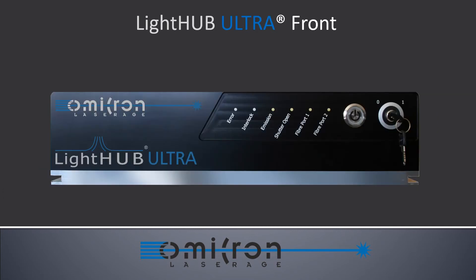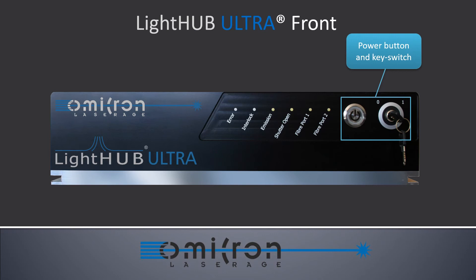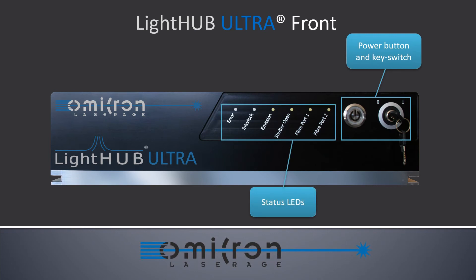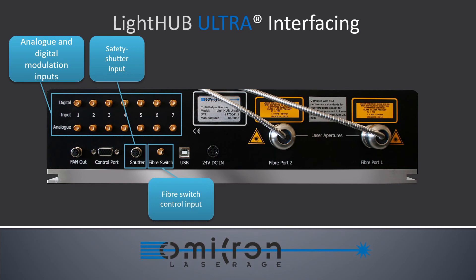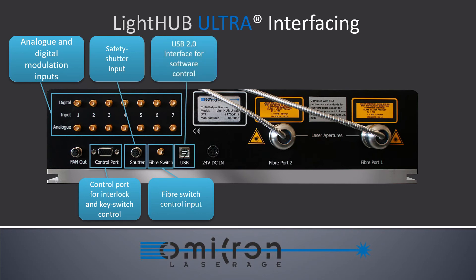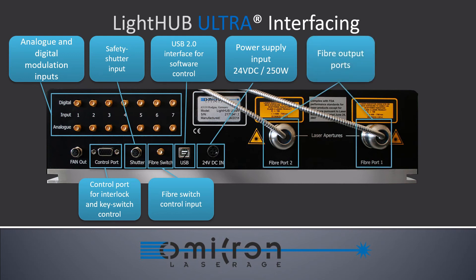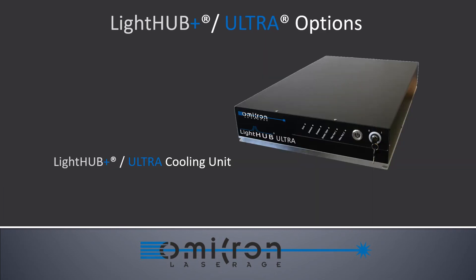As the LightHub Ultra can be equipped with two fiber outputs, you will find additional indicator lights at the front, like a fiber port indicator and shutter open LED. The LightHub Ultra has seven digital and analog modulation inputs, shutter input, fiber switch control port, control port for the interlock and key switch functions, USB interface for software control, power connector, and two fiber outputs as well as a fan connector. The LightHub Ultra can be passively cooled by mounting it on optical tables or breadboards, or by using the additionally available cooling unit controlled by the fan output.